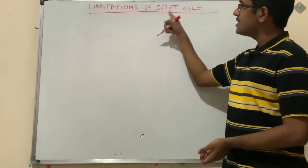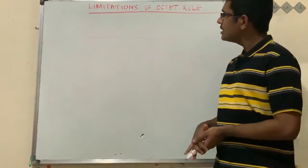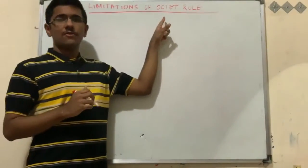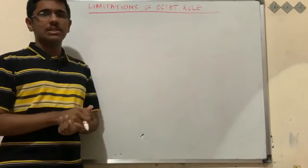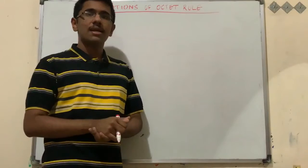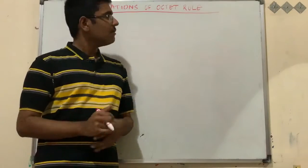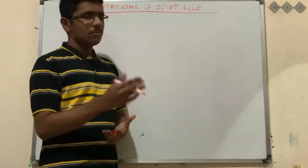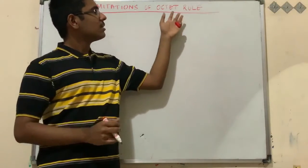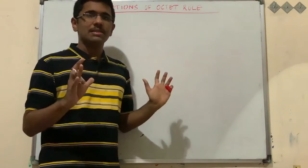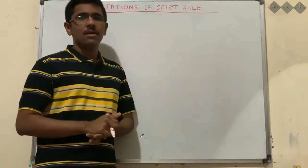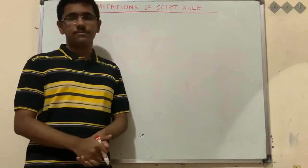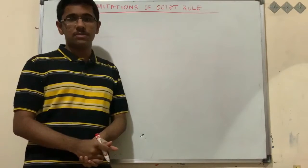We are going to discuss the limitations of the octet rule. According to Lewis, any atom on gaining octet configuration is said to be stable. For example, sodium positive and chlorine negative both have complete octet configurations. Octet rule means stability — when the outermost shell is completely filled, the atom is highly stable. However, this rule cannot be applied to explain the stability of all compounds, so there are various limitations.